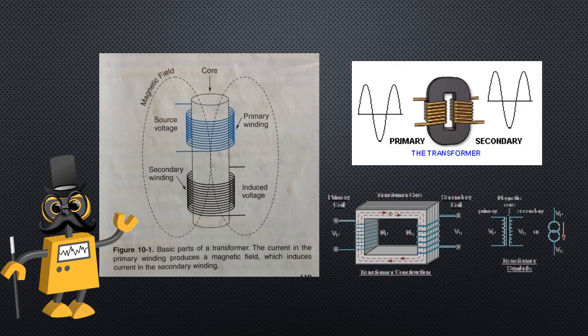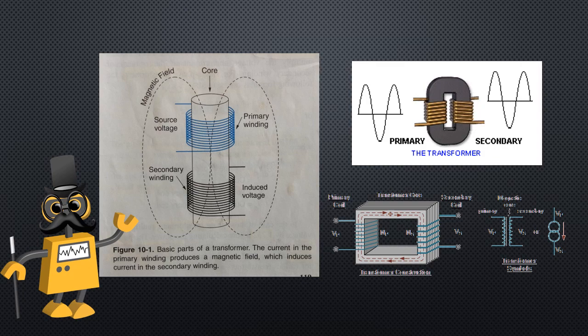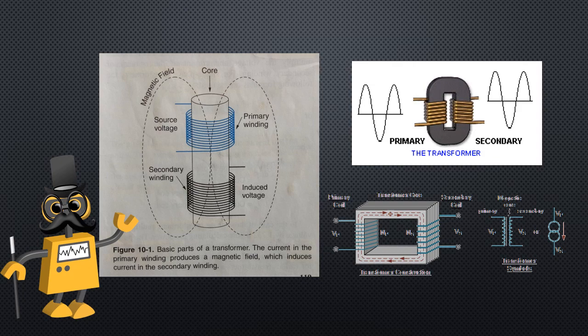The primary winding is energized with current and produces the magnetic field. The secondary winding produces current induced by the magnetic field. See figure 10-1 shown on the screen, left side.